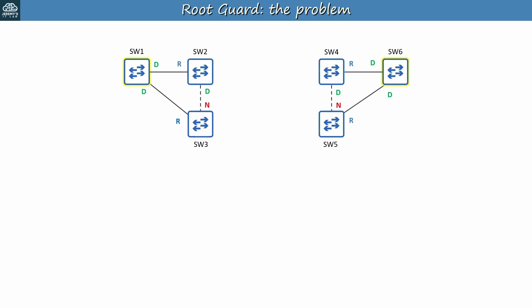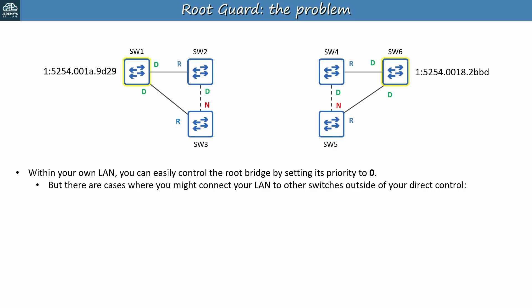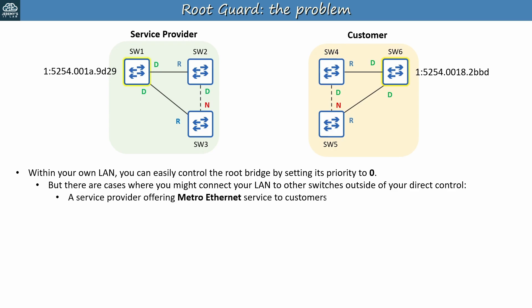Let's expand the network to show how root guard is useful. Within your own LAN you can easily control the root bridge by setting its priority to 0. For example, here is SW1's bridge ID. The priority is 0, plus 1 for the VLAN ID. Remember, Cisco switches run PVST+, so they always add the VLAN ID to the priority. Assuming SW2 and SW3 have the default priority, this makes SW1 the root bridge. And for the three switches on the right we'll do the same for SW6, making it the root bridge for its LAN. However, there are cases where you might connect your LAN to other switches outside of your direct control. For example, maybe the LAN on the left is controlled by a service provider, and the LAN on the right is controlled by a customer. This is one example where switches controlled by different organizations might be connected — a service provider offering Metro Ethernet services to customers.